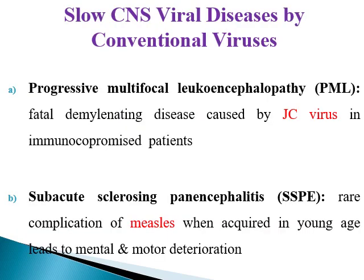Among diseases caused by conventional viruses, the first is called progressive multifocal leukoencephalopathy. Progressive means it increases with time; multifocal means it involves multiple areas of the brain; leuco indicates it is a demyelinating disease that destroys the myelin of the CNS; and encephalopathy means there is pathology without inflammation. This disease is fatal and is caused by the JC virus, occurring in immunocompromised patients.